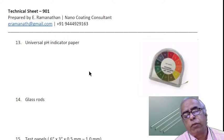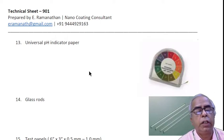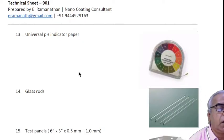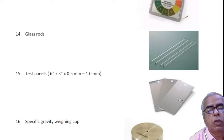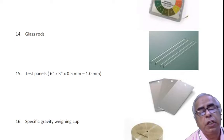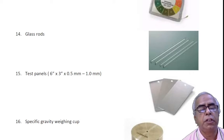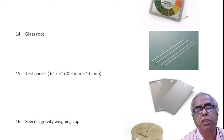You should have pH paper, universal indicator pH paper, where you can find the pH between 0 and 14. You have glass rods and test panels, which are very important. Normally it is 6 by 3 inches with proper perforation.